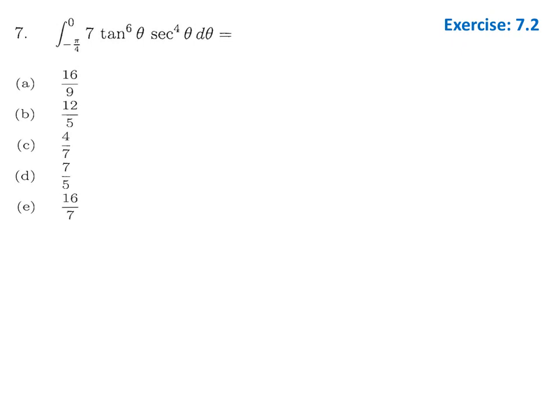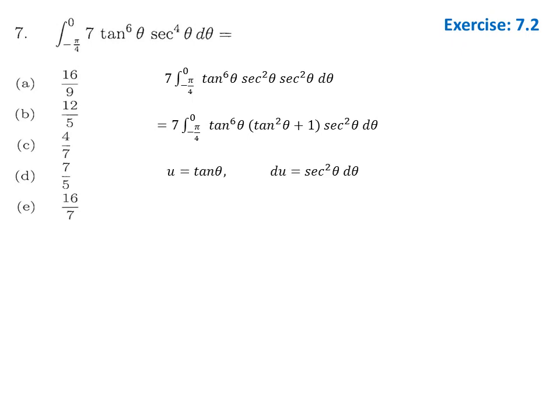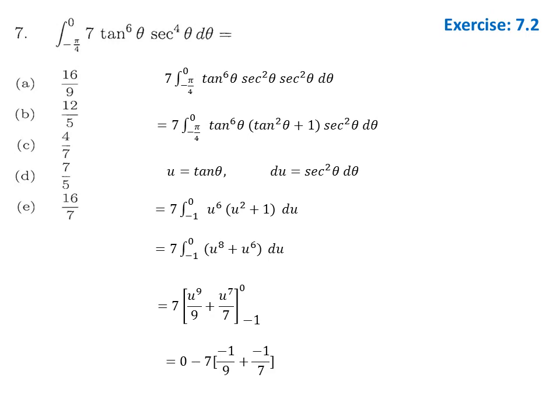Question 7 is a trigonometric integral solved without limits first. Since secant has an even power, we split it as sec²(θ)·sec²(θ), converting one factor using sec²θ = 1 + tan²θ. With substitution u = tan(θ), du = sec²θ dθ, the integral becomes a polynomial: ∫(u⁸ + u⁶) du = u⁹/9 + u⁷/7. Plugging limits −1 to 0 gives 16/9. Option A is the answer.